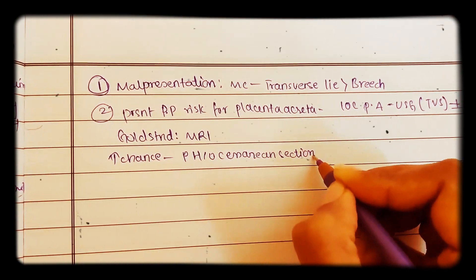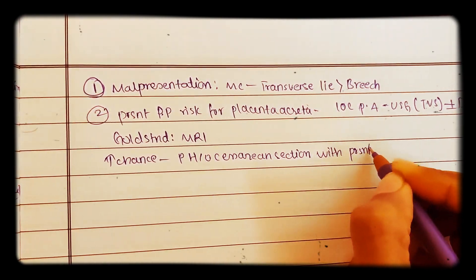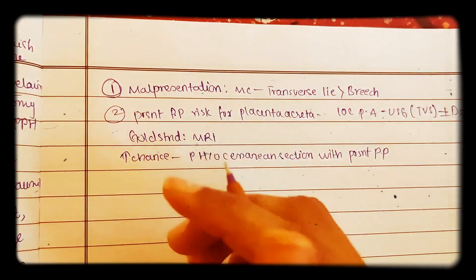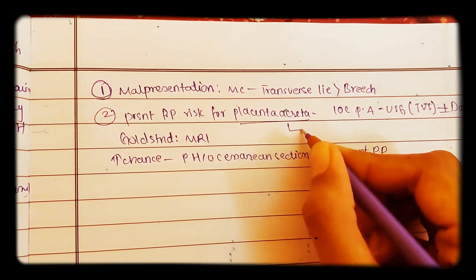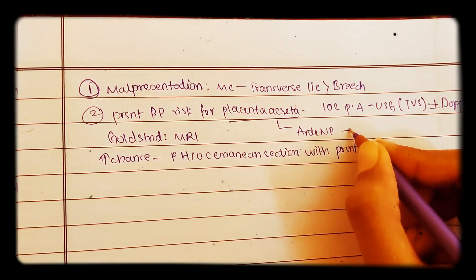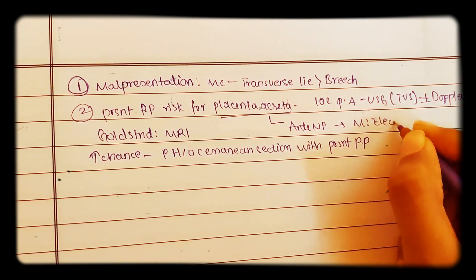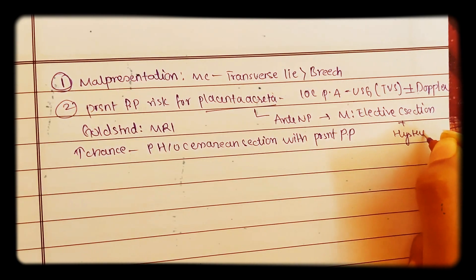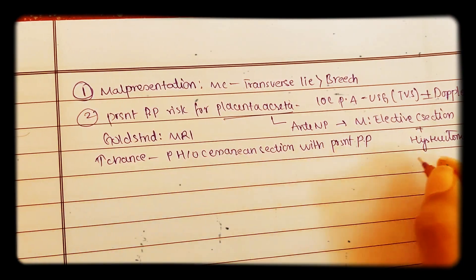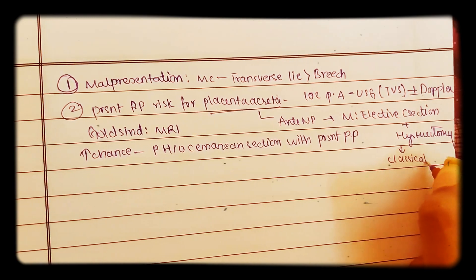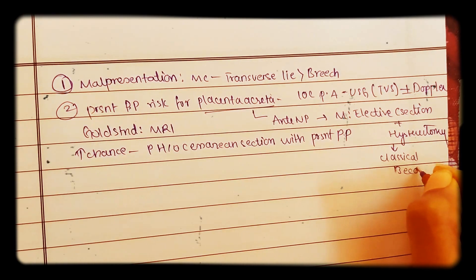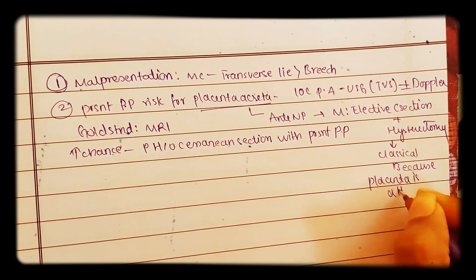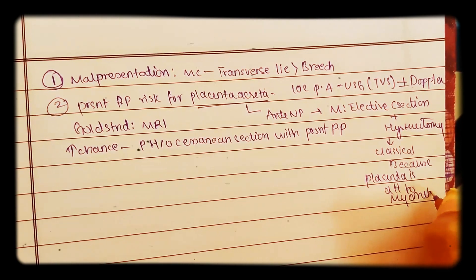The highest chance of placenta accreta occurs with a previous history of caesarean section with present placenta previa. If placenta accreta is detected in the antenatal period, the management is elective c-section plus hysterectomy. You can also go with classical caesarean section because the placenta is attached to the myometrium.